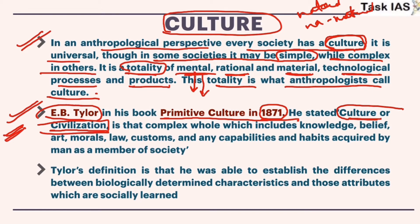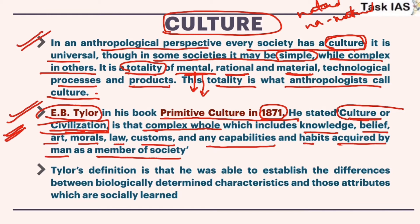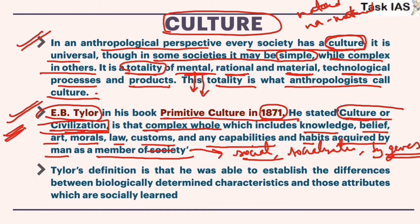According to Tylor, culture or civilization is 'that complex whole which includes knowledge, beliefs, art, morals, law, customs and any capabilities and habits acquired by man as a member of society.' This shows that culture is social and is learned by socialization — it is not inherited by means of genes. So culture has no relation with our physical features or genetic system.